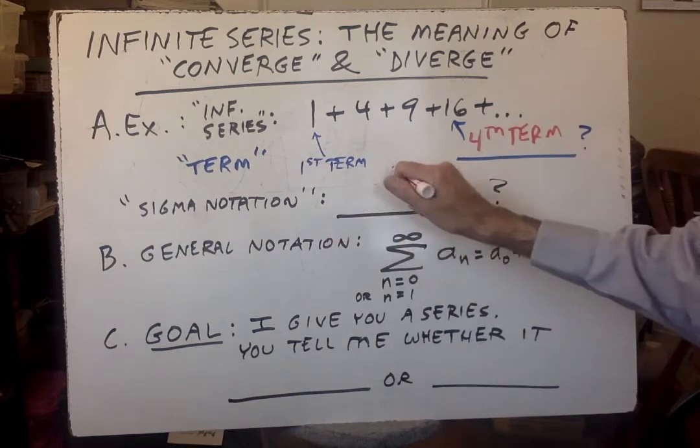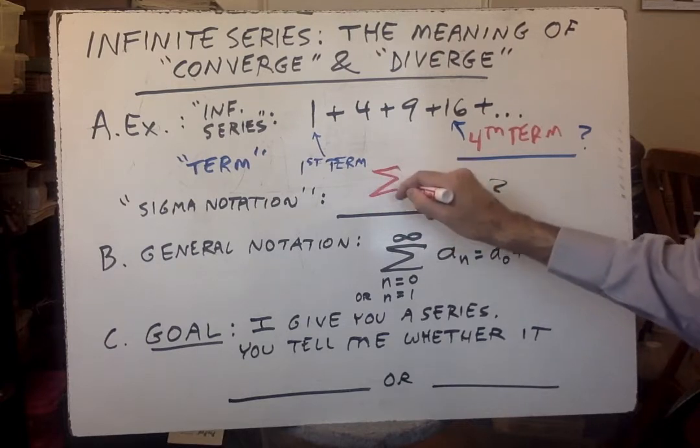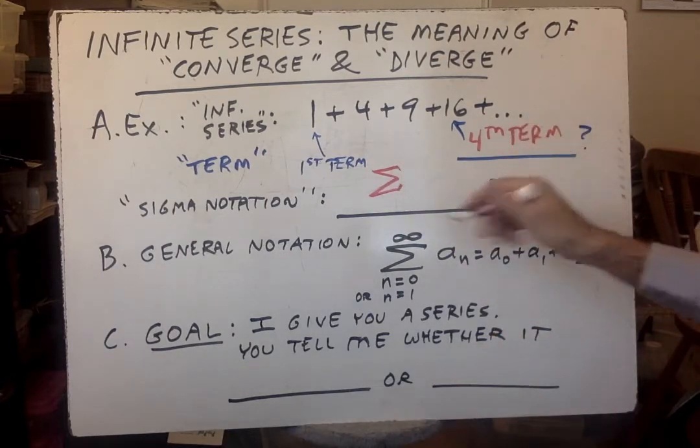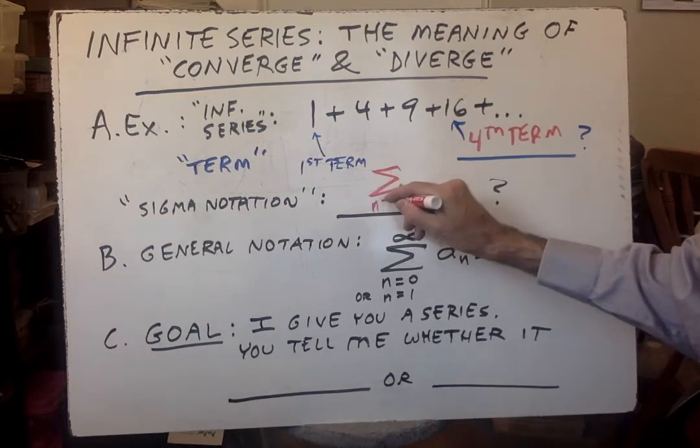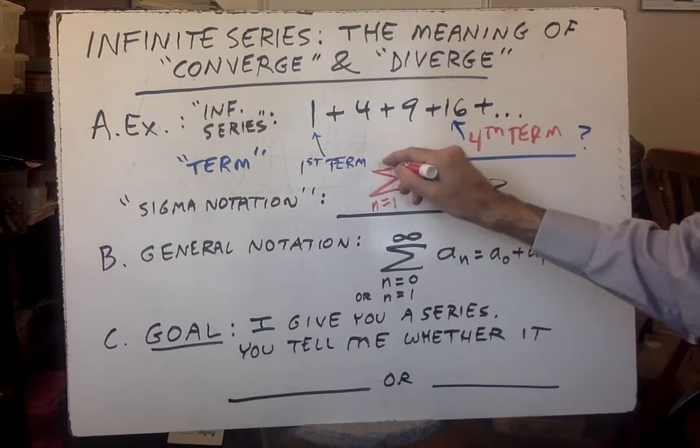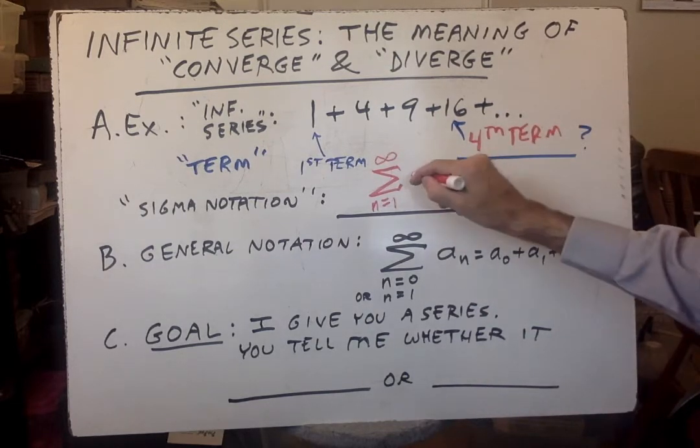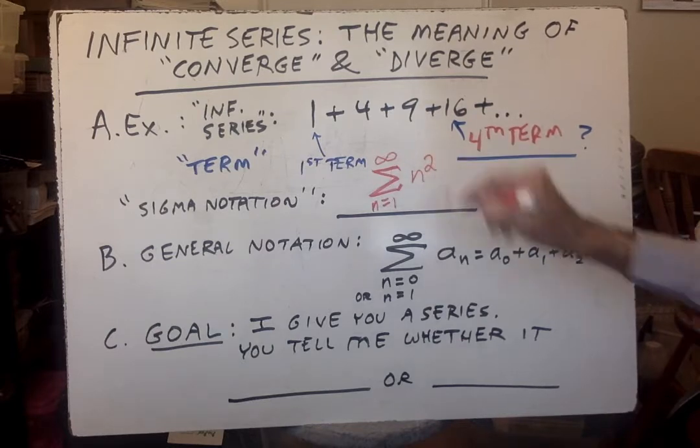Now, sigma notation means we can express this whole series with a sigma sign, meaning summation, or here really kind of means series. You tell what letter you're using as the index and where it starts, then you put the infinity symbol here saying there's no end to it, and then you write the pattern. In this case, the pattern would be n squared.